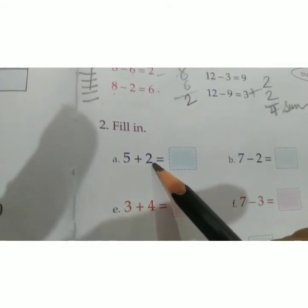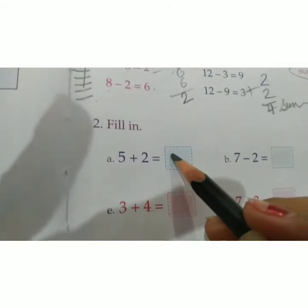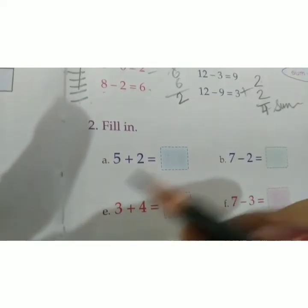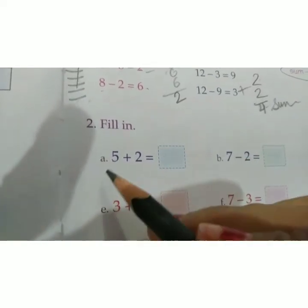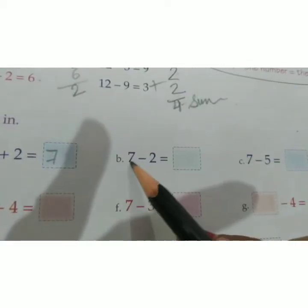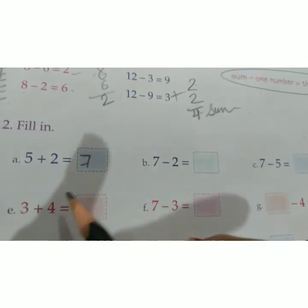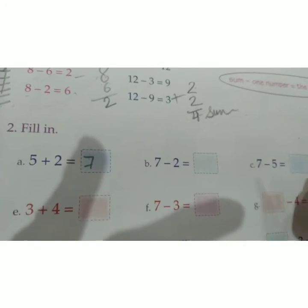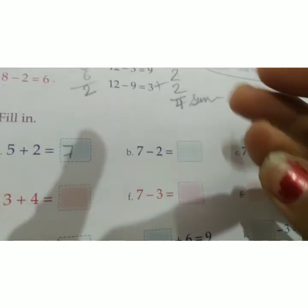Fill in the blanks. First: 5 plus 2 equals — count forward from 5: 5, 6, 7 — so the answer is 7. Then: 7 minus 2 — backwards counting from 7: 7, 6, 5 — so 7 minus 2 equals 5.